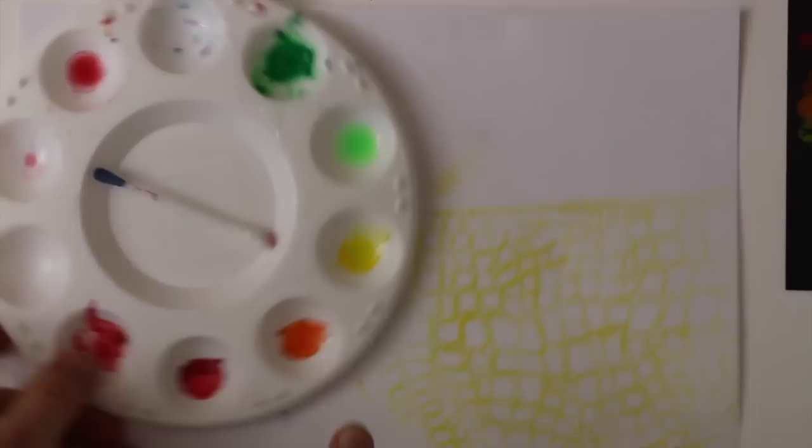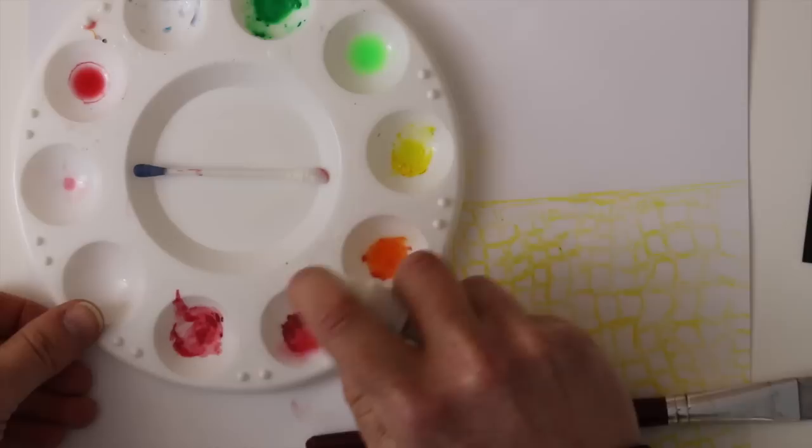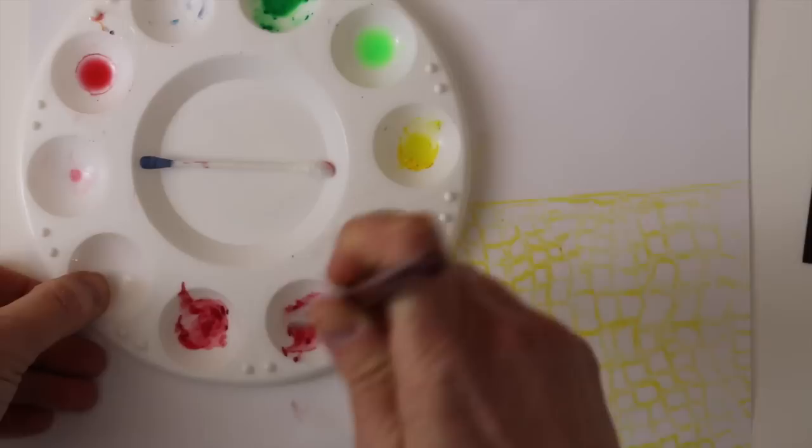One last thing before we go: you can actually just scribble a little bit of the crayon into a palette—you can use any plastic surface—and then add a little bit of water and you get watercolor paint basically.